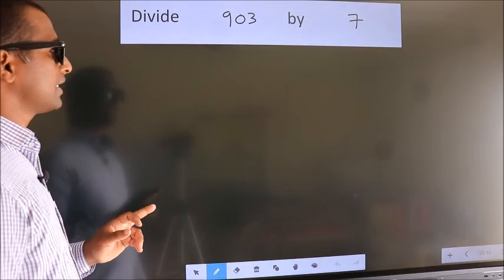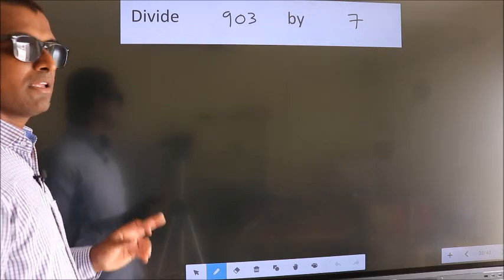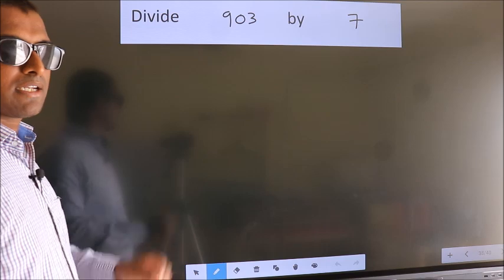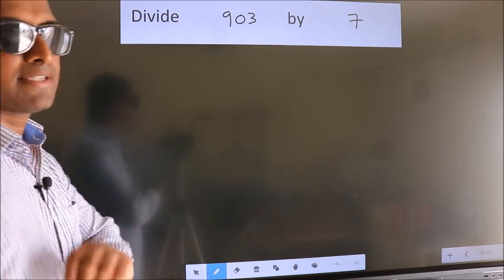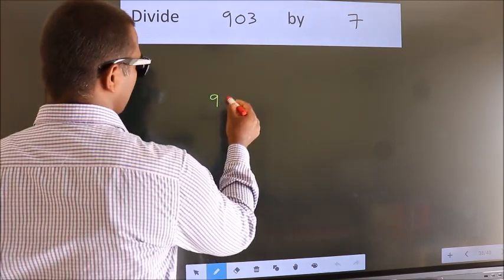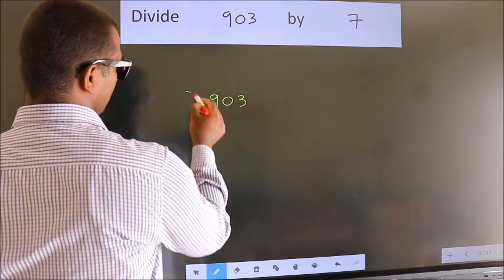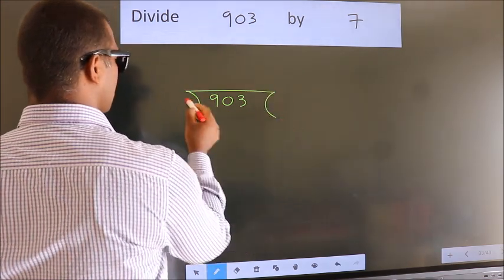Divide 903 by 7. To do this division, we should frame it in this way. 903 here, 7 here.